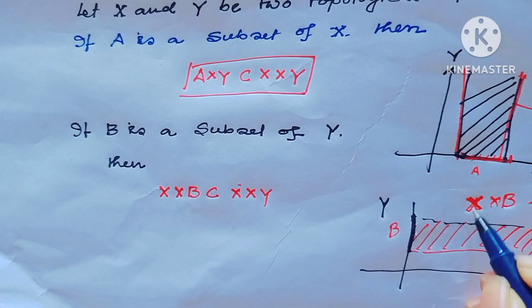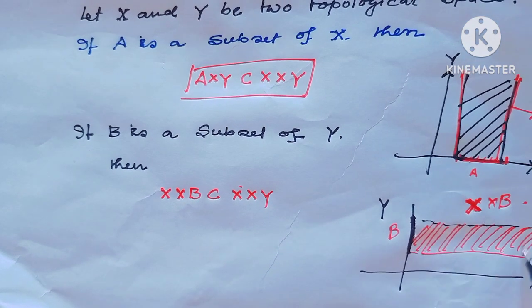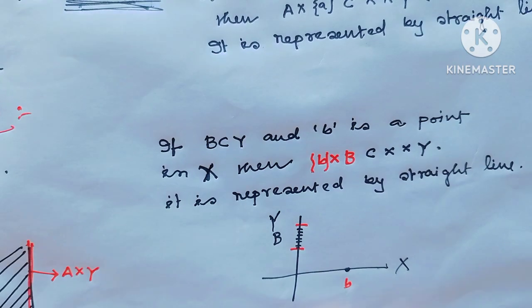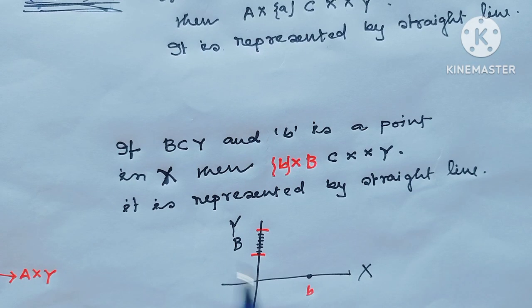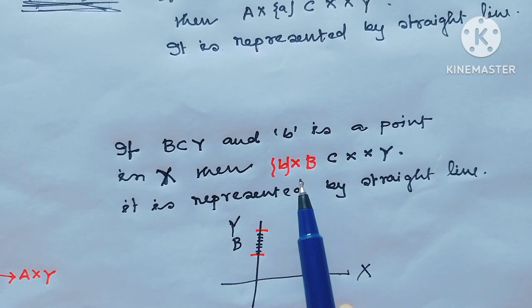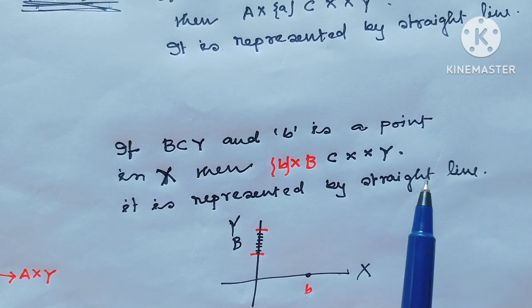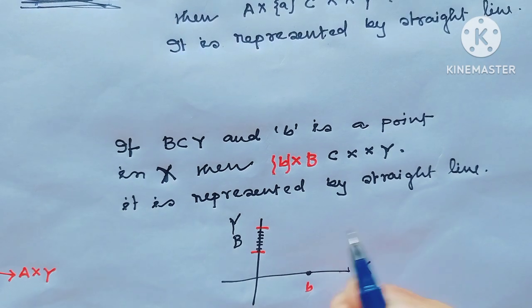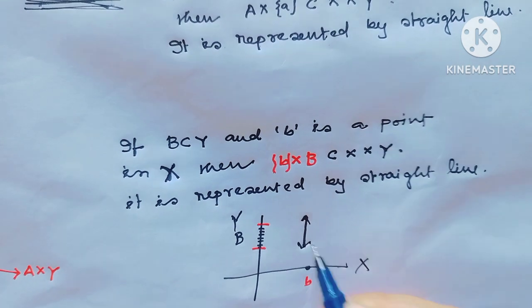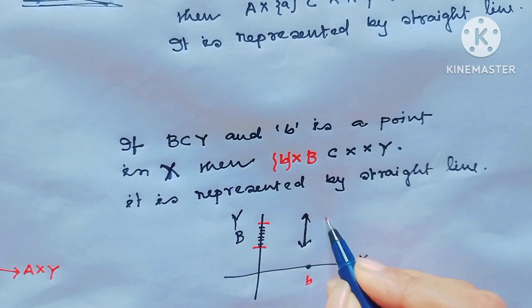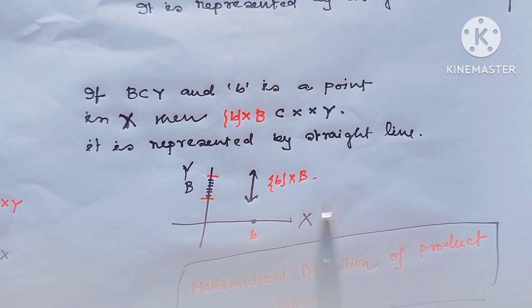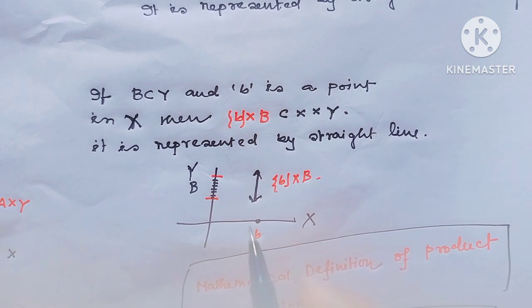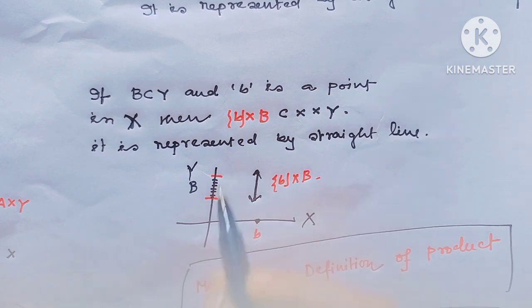This region is X cross B. I hope all viewers have understood. If B is a subset of Y and small b is a point in X, then small b cross B is always contained in X cross Y, and it is represented by this type of straight line. This is small b cross B — a product between the point and the set.